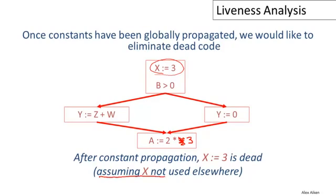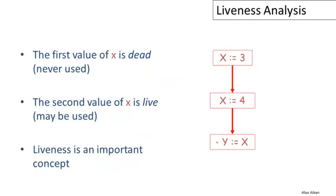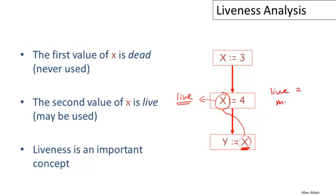However, we can only do that if X is not used elsewhere in the program. Let's be more careful about what we mean by saying that X is not used. Down here is a use of X — a reference to X in a statement — and clearly this particular reference to X is picking up the value defined by this write to X here. So we say that this write of X is live, meaning the value may be used in the future.